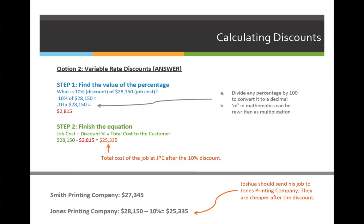This is exactly the same problem we did with the fixed rate discount, but this time when we go to calculate the second cost — the Jones Printing Company cost — we have to calculate a percentage. Just like the first example, Smith Printing Company is not offering a discount, so the total price that they would charge is $27,345. We don't have to do anything else with Smith Printing Company.